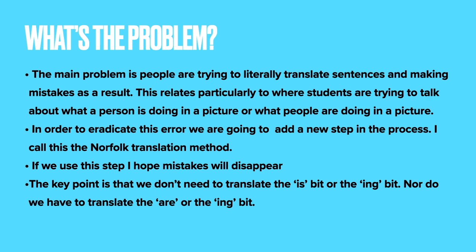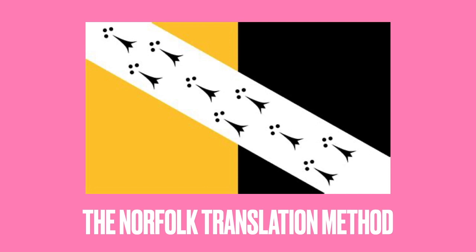So I'll explain the Norfolk Translation Method. There's a strange quirk of the Norfolk vernacular — a broad Norfolk way of talking — where people seem to put the subject pronouns next to the infinitive. So 'he goes' becomes 'he go', and 'she go', and 'he eat', and 'they do'. I think this is quite a useful little method for helping us to eradicate the error that we make in the present tense in French. If we add this additional step of the Norfolk Translation Method, I'm sure that we can get much more accurate present tense in French.